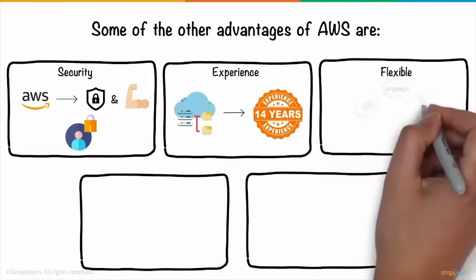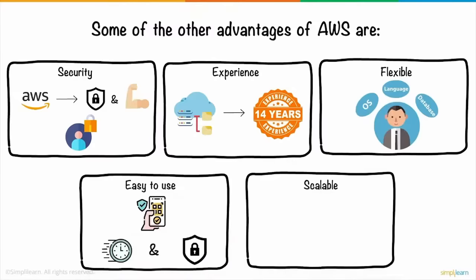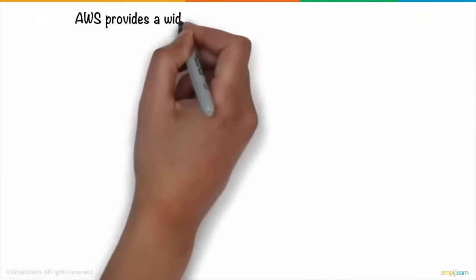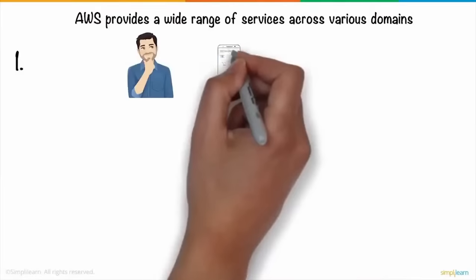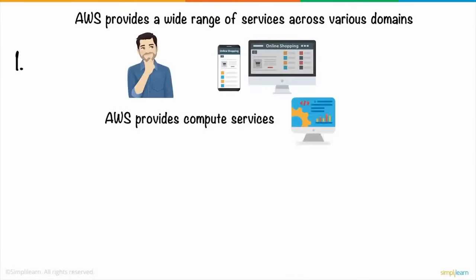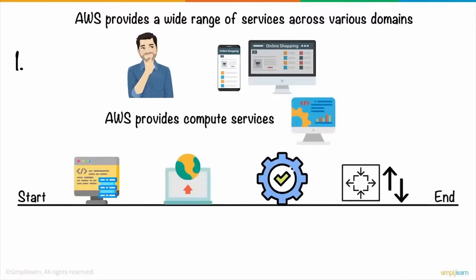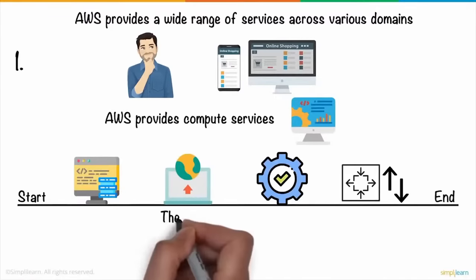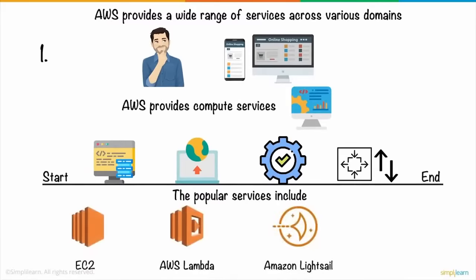AWS is also flexible — it allows users to select the OS, language, database, and other services. It's easy to use, as users can host applications quickly and securely. It's scalable — applications can be scaled up or down depending on user requirements. AWS provides a wide range of services. For compute, popular services include EC2, AWS Lambda, Amazon LightSail, and Elastic Beanstalk. For storing website data, AWS storage services enable Rob to store, access, govern, and analyze data to ensure costs are reduced and innovation accelerated — popular services include Amazon S3, EBS, S3 Glacier, and Elastic File Storage.